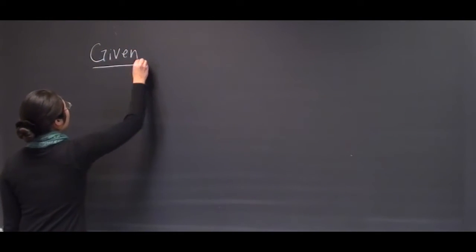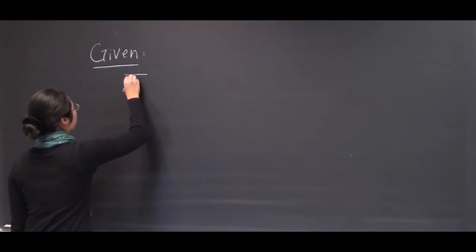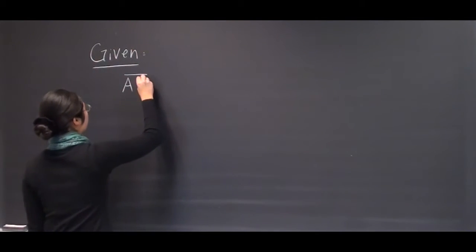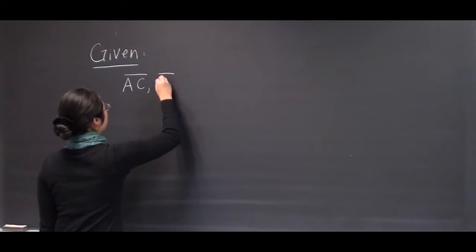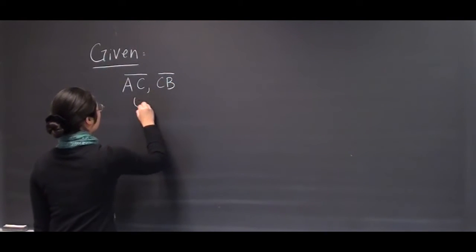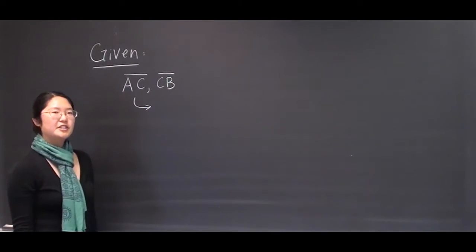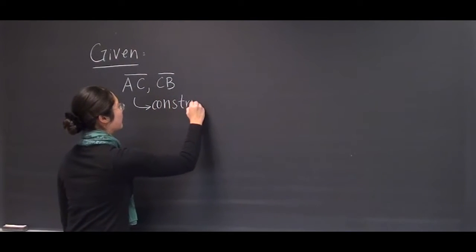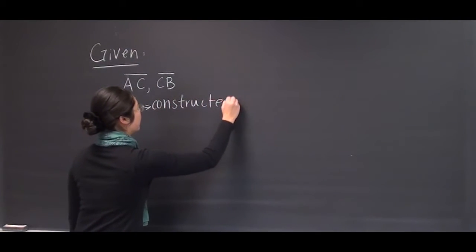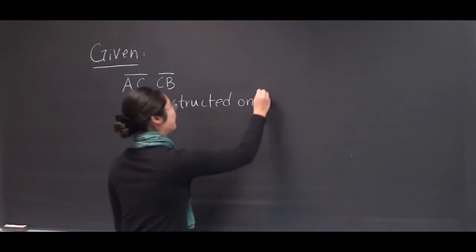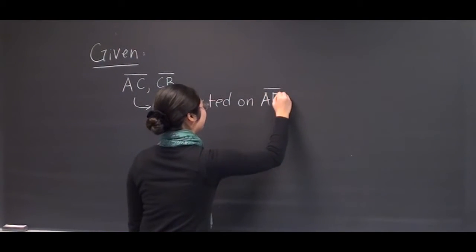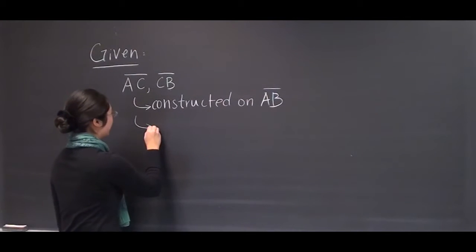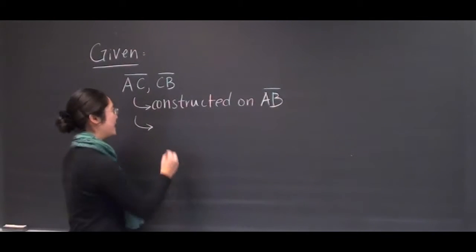Given two straight lines, AC and CB, which are constructed on line AB and meet at point C,